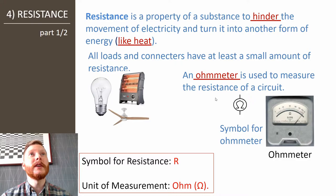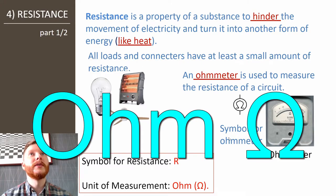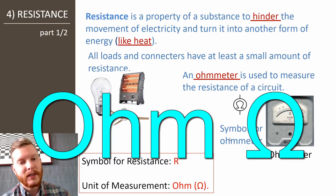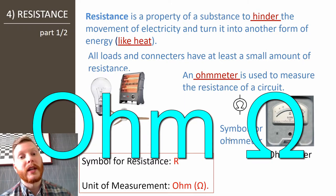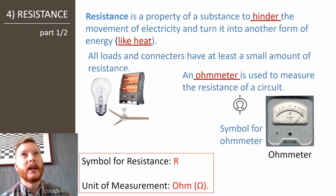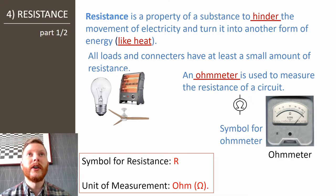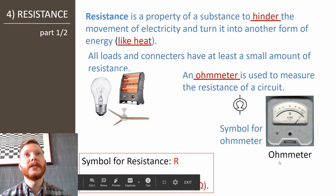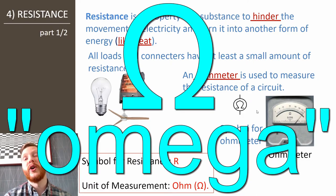Every device will have some type of measurement called an Ohm. We use Ohms for dealing with resistance, and it gets this interesting symbol called Omega. You can use an Ohmmeter to measure resistance.